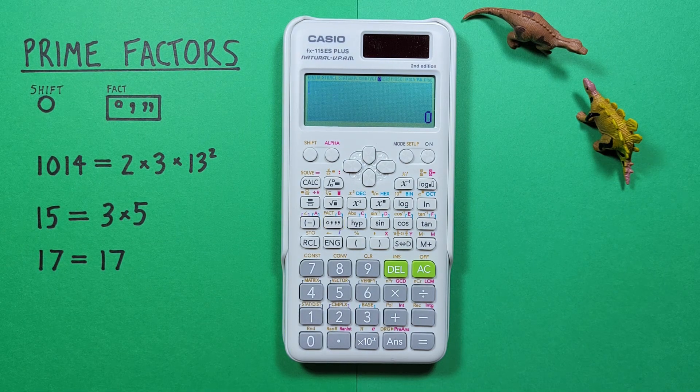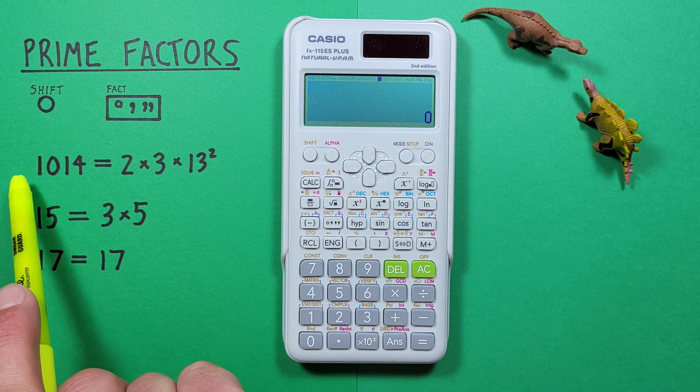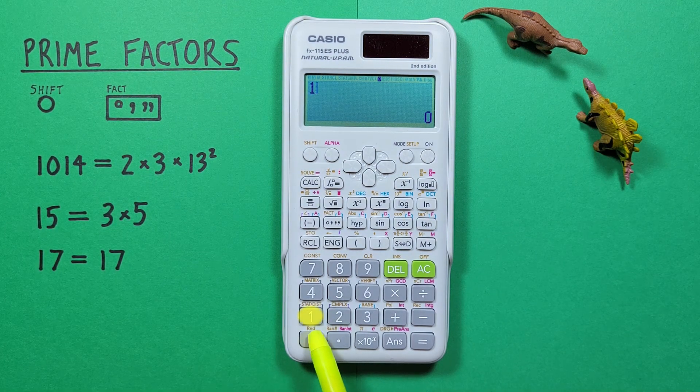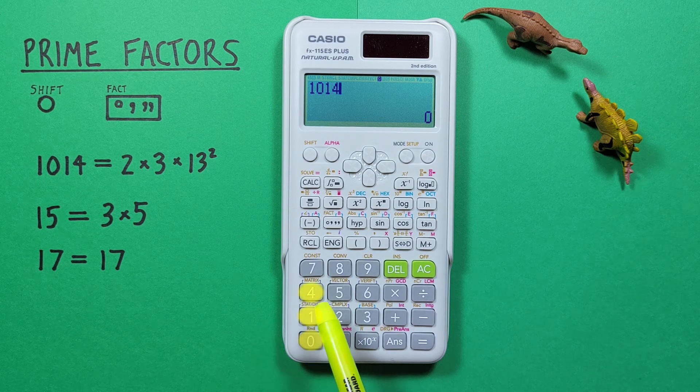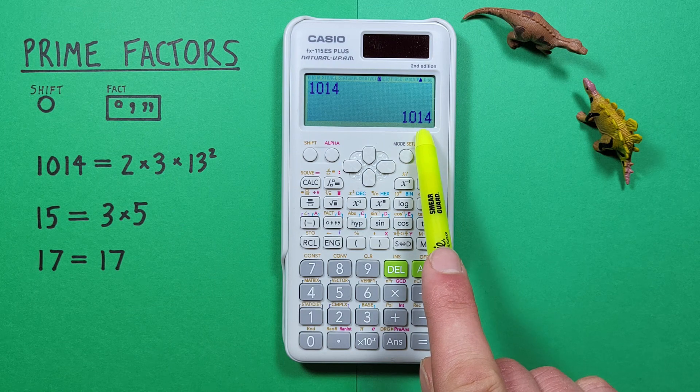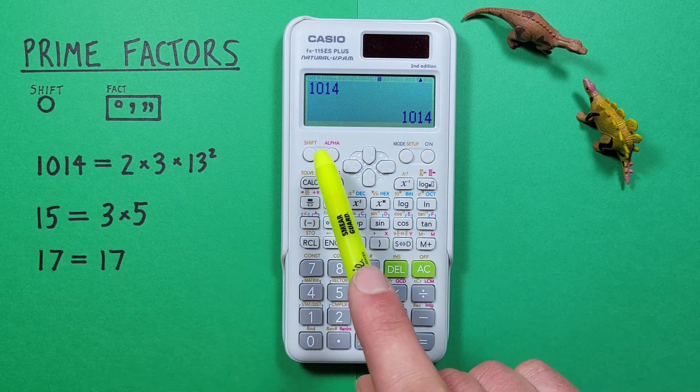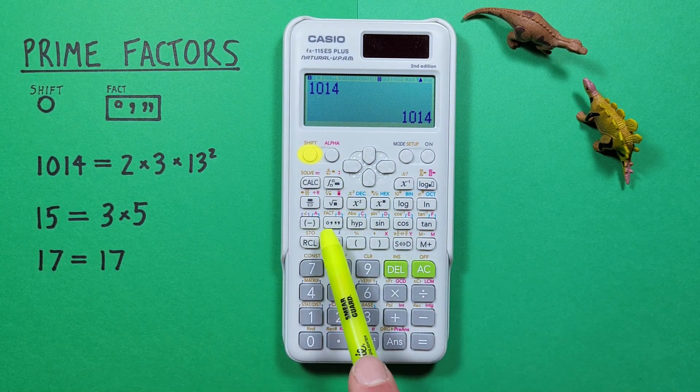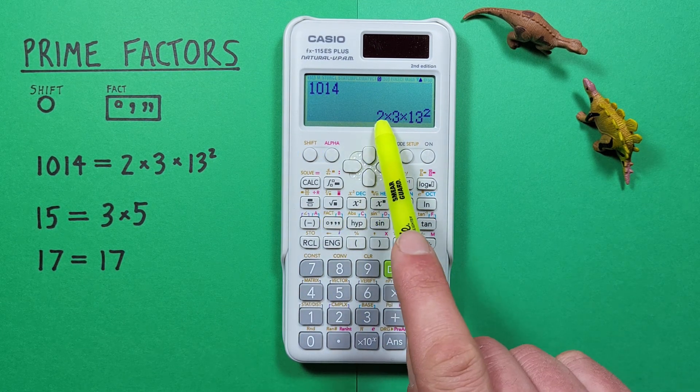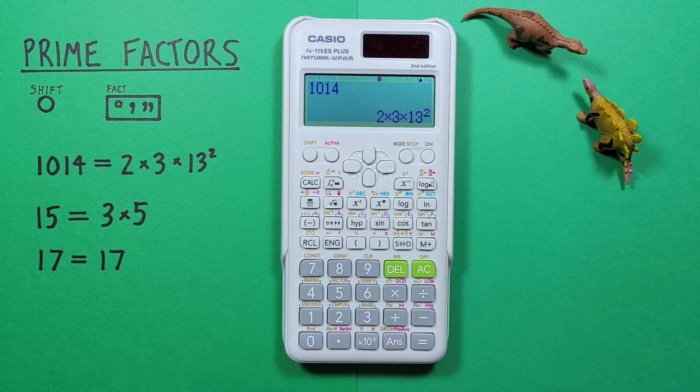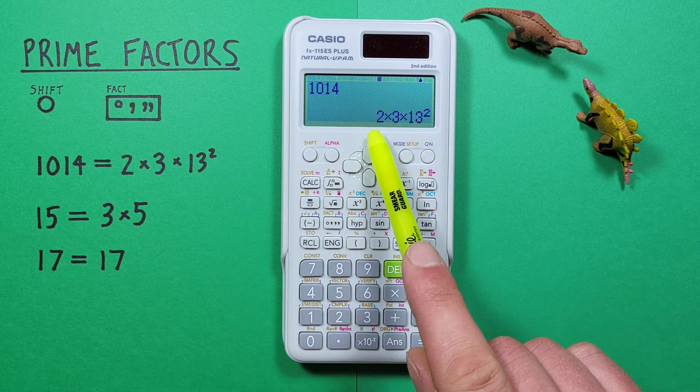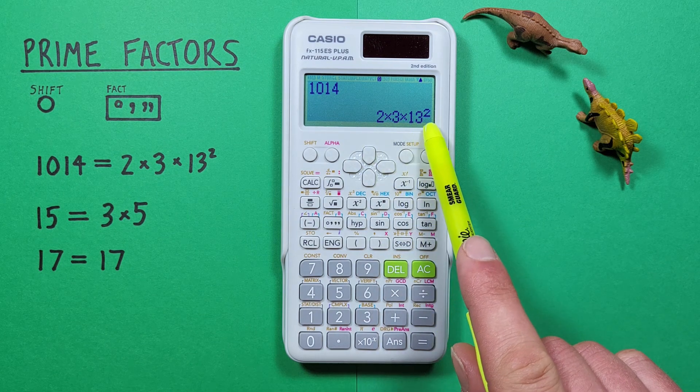If we wanted to find the prime factors that go into a value like 1014, what we do is enter the number on our calculator and press equals, so that our value is down here in the bottom right. Next we push shift and the degree minute seconds key. And now that gives us our prime factors. So the prime factors for 1014 are 2 times 3 times 13 squared.